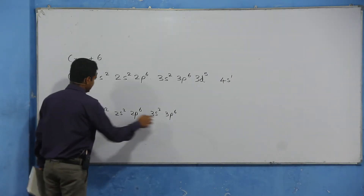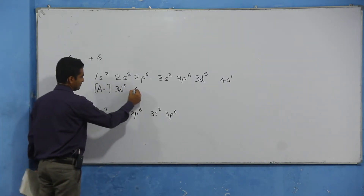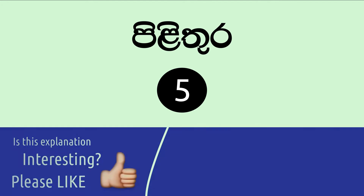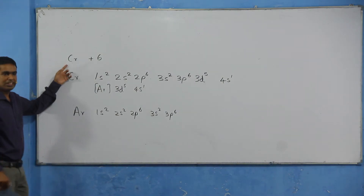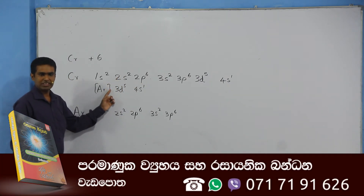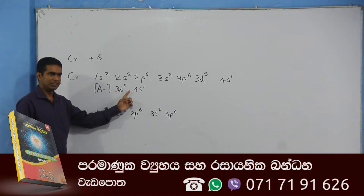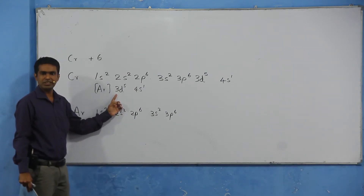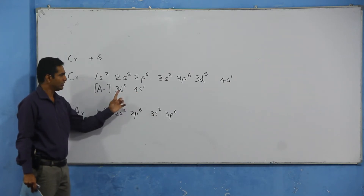There is an example of this, and this is the scale of 2.1. The chromium in the field is called the chromium-alum, which are from the age of 50. The chromium is called the chromium in the field.